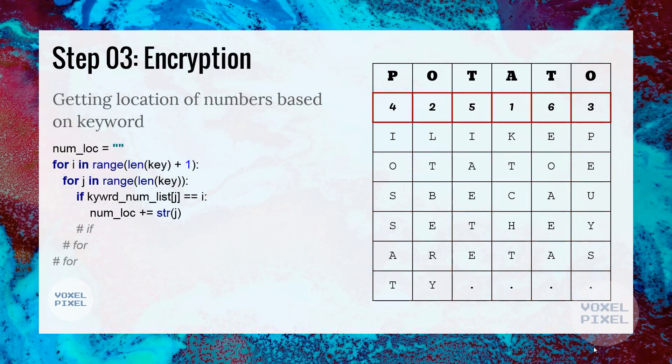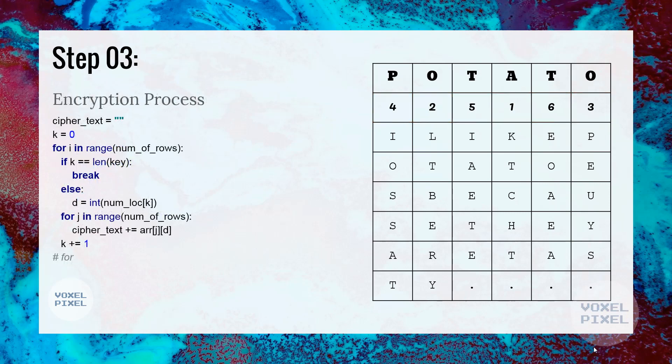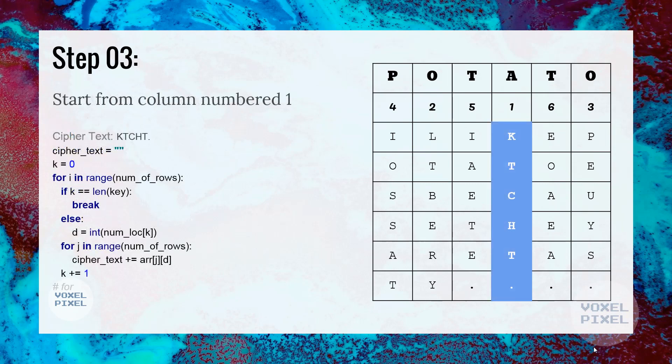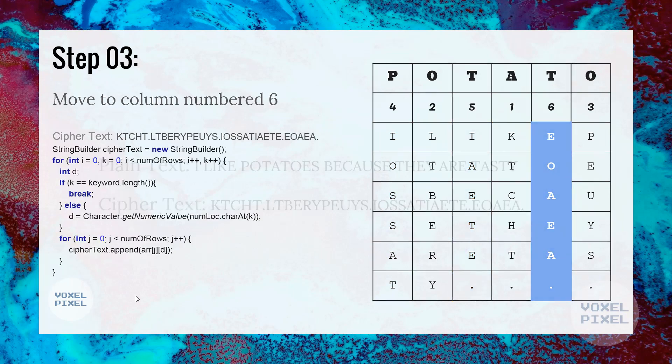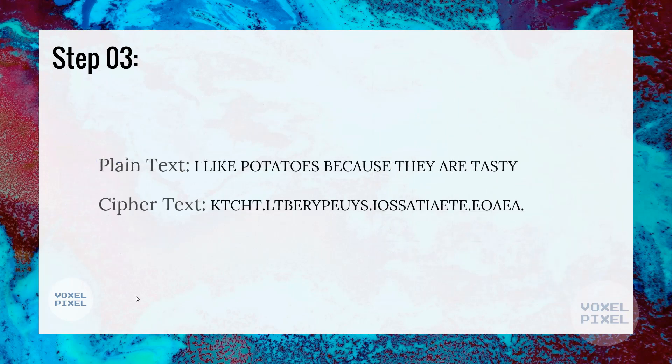We will find location of numbers according to the keyword, like what's the location of number 1, number 2, number 3 and up to the last number. The encryption process will begin by taking each letter from the column, starting from column number 1. Here, the letters are K, T, C, H, T and dot. We will write all of them next to each other. As you can see on the left side, next to ciphertext. Next, we will move on to the column number 2 and write its letters. We will keep on doing this till we reach the last column and we have obtained our ciphertext.